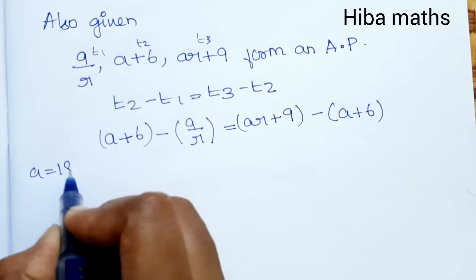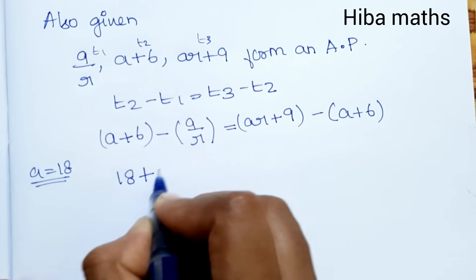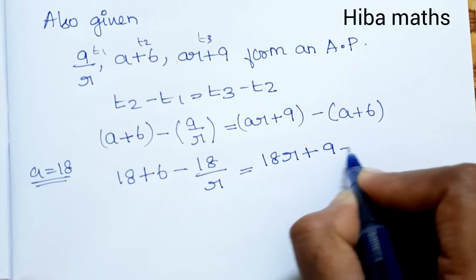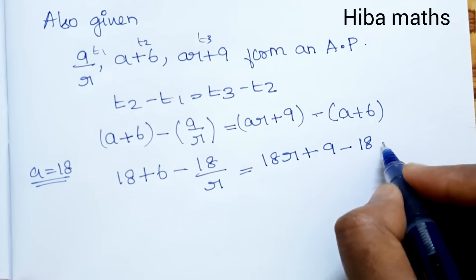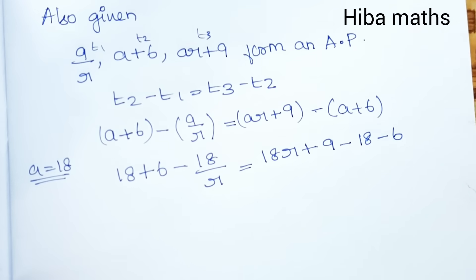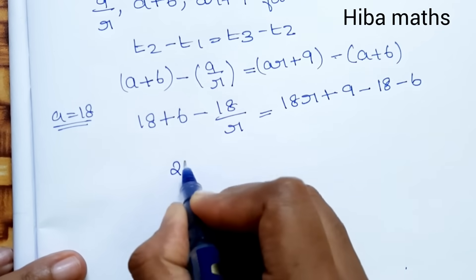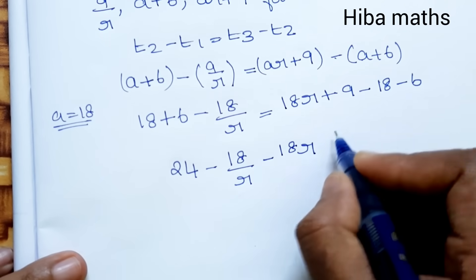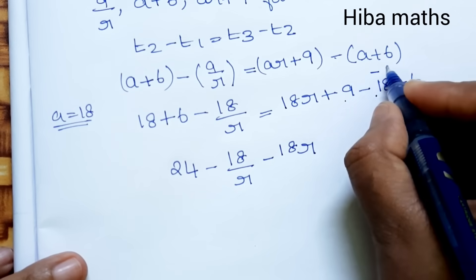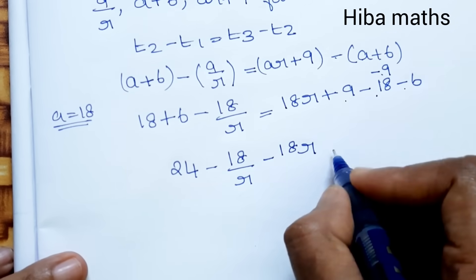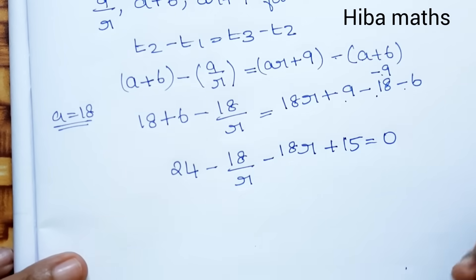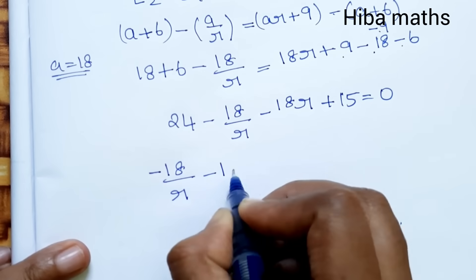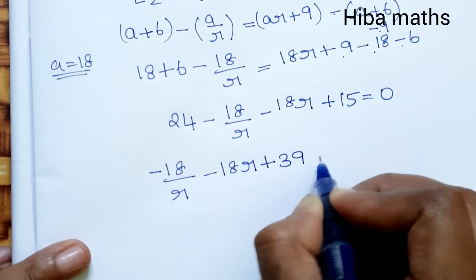Now we know a equals 18. So substituting: a plus 6 minus a/r equals ar plus 9 minus a plus 6. That gives us 18 plus 6 minus 18/r equals 18r plus 9 minus 18 minus 6. Simplifying, minus 18/r on this side and plus terms on the other side give us minus 9 and minus 6, which is minus 15. So minus 18/r minus 18r plus 24 plus 15 equals 0.